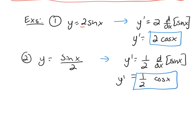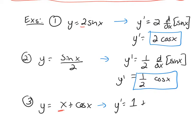For the third trig example, y equals x plus cosine x. Here we have a sum, so when finding the derivative, work term by term. The derivative of x, using the power rule, is 1. The derivative of cosine is negative sine. So I change this to a minus, and the derivative is 1 minus sine x.